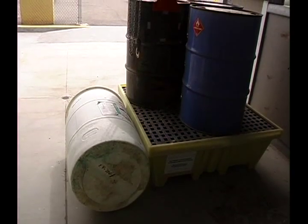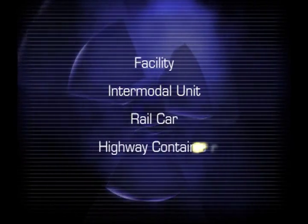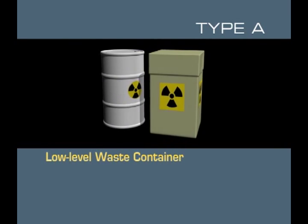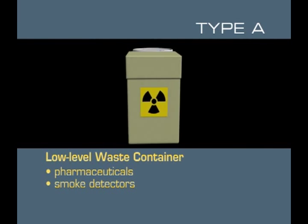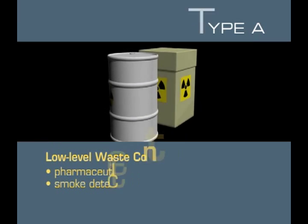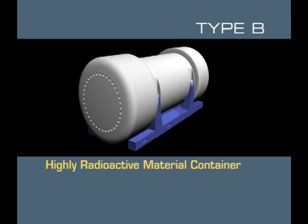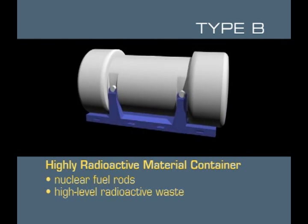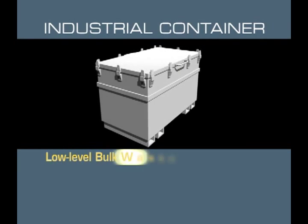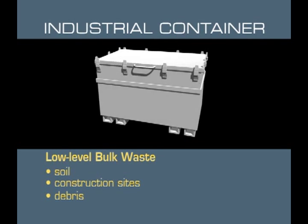The fifth and final group of containers to quickly recognize are those used to transport radioactive materials. They can be found in a facility, intermodal unit, rail car, or highway container. Type A radioactive containers are usually steel drums or boxes designed to carry low-level waste such as pharmaceuticals and smoke detectors, and are designed to withstand minor impacts. Type B containers carry highly radioactive materials, are designed to withstand severe accidents, and are typically made of heavy metal casks carrying nuclear fuel and high-level radioactive waste. Industrial containers are used for low-level waste from soil, construction sites, and debris, and are usually large metal boxes that can be easily transported.